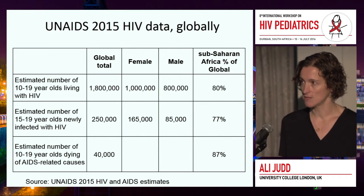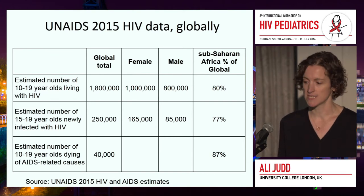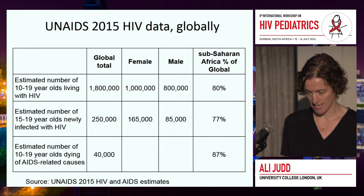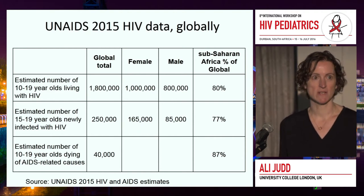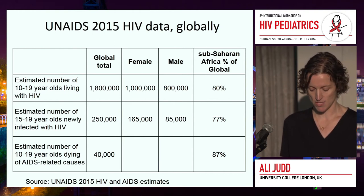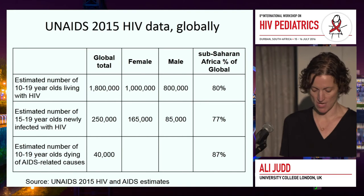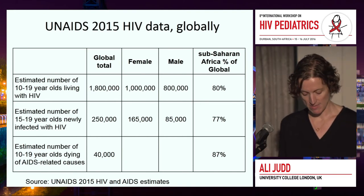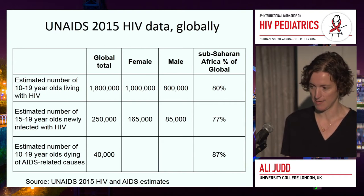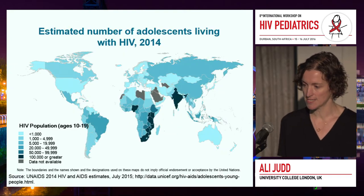There were 250,000 new infections in 15 to 19-year-olds, and about 40,000 10 to 19-year-olds dying from AIDS-related causes in 2015. The majority of these adolescents are living and dying in sub-Saharan Africa. We know from the WHO that AIDS and HIV is now the second leading cause of death in adolescents, and adolescents are the only group in which AIDS deaths are increasing, but we don't really know the drivers for this.